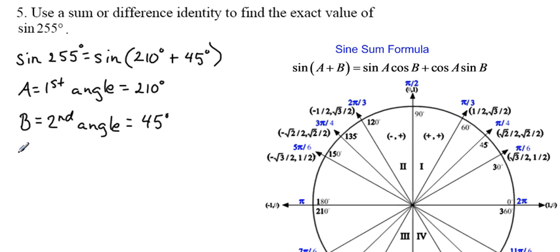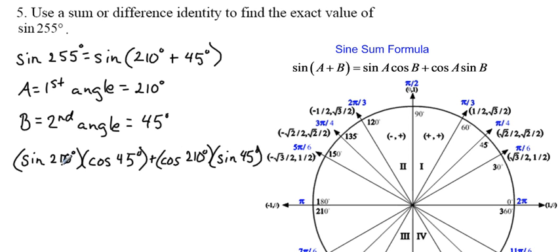The sine of the first is going to be the sine of 210 degrees, because we just said that 210 degrees is our first angle, times the cosine of the second angle, so that would be the cosine of 45 degrees, plus the cosine of the first angle, which would be the cosine of 210 degrees, times the sine of the second angle, which would be the sine of 45 degrees.